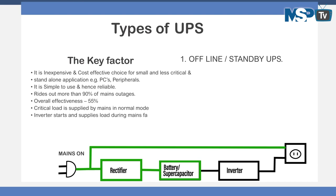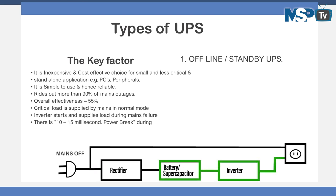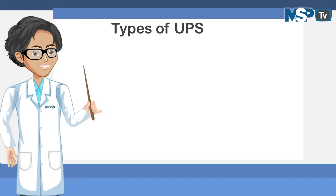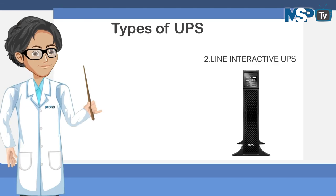In normal mode, the critical load is supplied by mains. The inverter starts and supplies the load during mains failure. There is a 10 to 15 millisecond power break during every mains failure and resumption. The second type of UPS is the line interactive UPS.